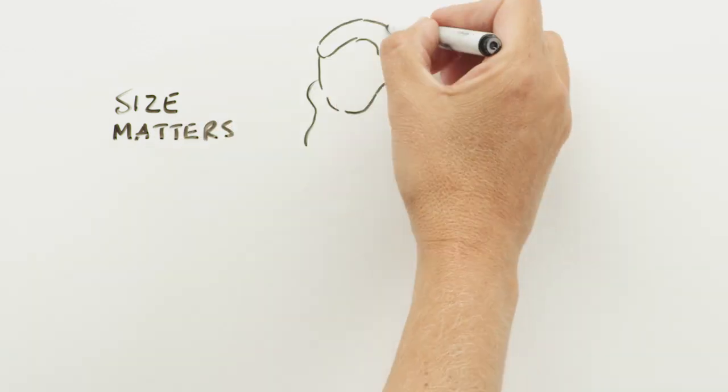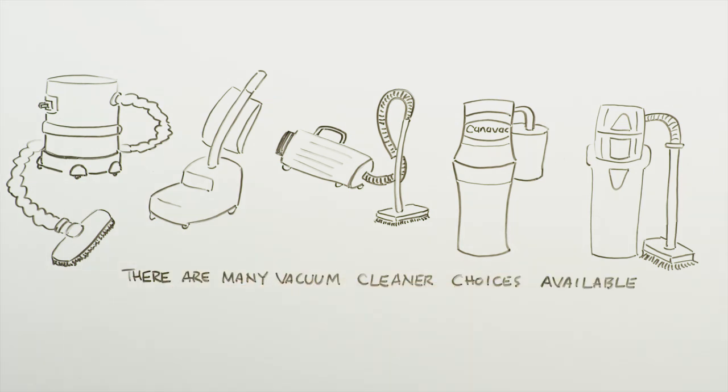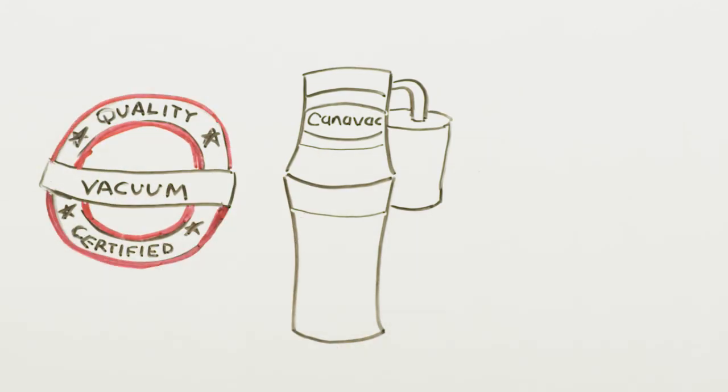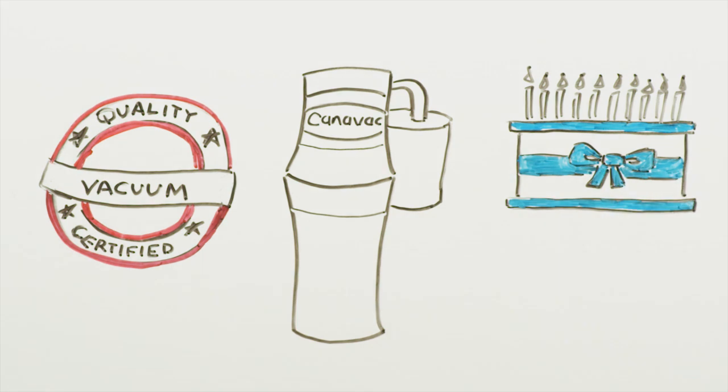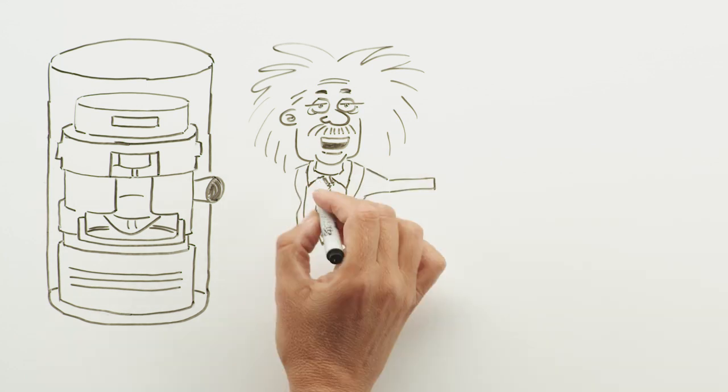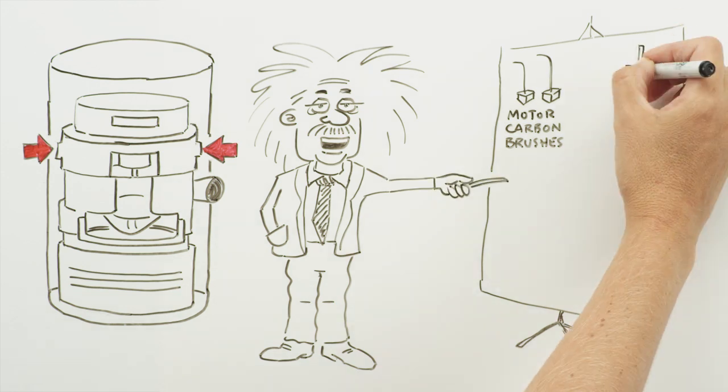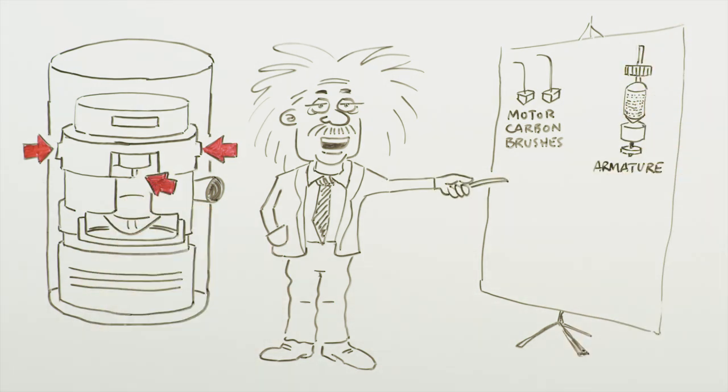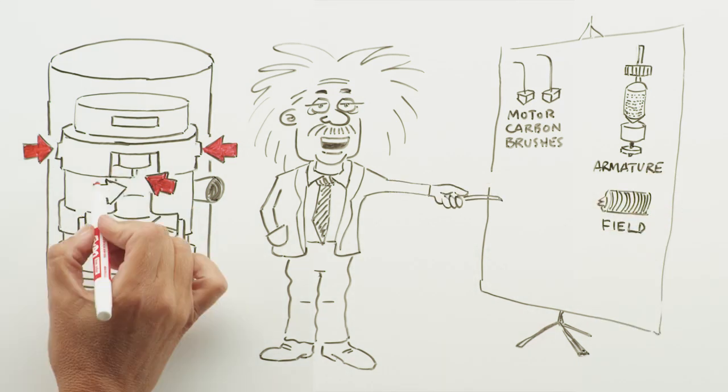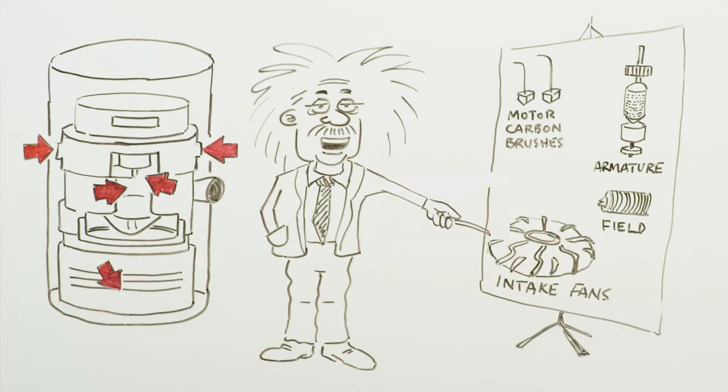This is where size matters. There are many vacuum cleaner choices available, but the quality and longevity of each depends on the motor. A central vacuum motor consists of several parts. These include motor carbon brushes that conduct electrical current, the armature which converts electrical power to mechanical torque, the field which is the magnetic component of a motor, and the intake fans. Typically more intake fans, the greater the size, the greater the performance.